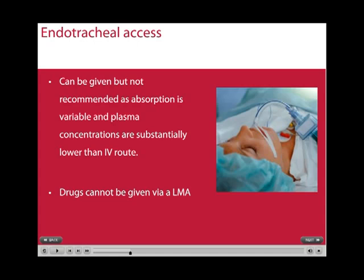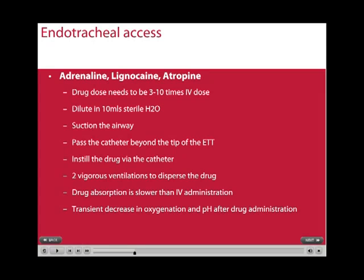Some medications can be administered via the endotracheal route, however it is not recommended as absorption is highly variable and plasma concentrations are substantially lower than the IV route. No drugs can be given via an LMA. The drugs that can be administered via endotracheal access are adrenaline, lignocaine, and atropine. The drug dose needs to be at least 3 to 10 times the intravenous dose and must be diluted in 10 ml of sterile water. Prior to administering the drug, the airway should be suctioned and a catheter passed beyond the tip of the endotracheal tube. Instill the drug via the suction catheter, then give two vigorous ventilations to disperse the drug into the lungs. Drug absorption will be slower than the IV route and transient decreases in oxygenation and pH after drug administration can occur.